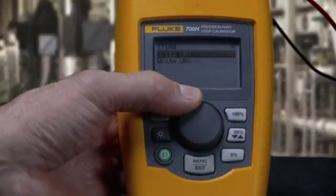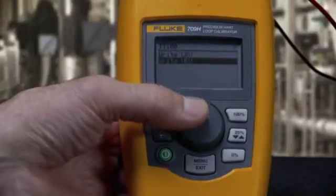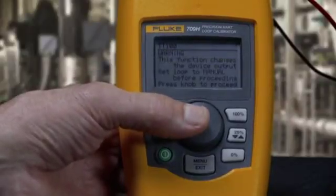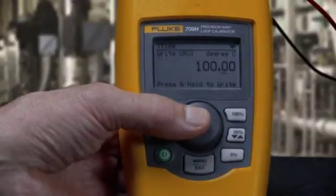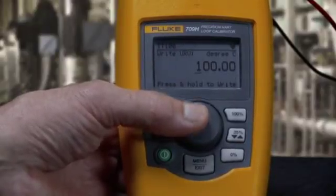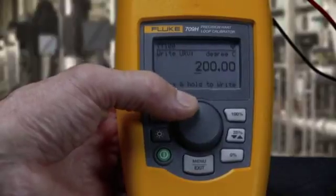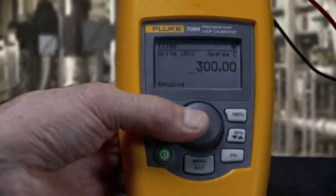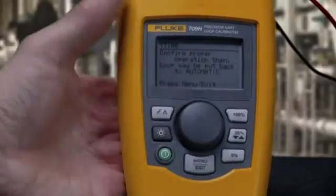The 709 has the ability to rerange a transmitter. Move the cursor to the range point you want to change, like the 100% URV point for example, and hit select. Pressing the thumb wheel changes the decade to update. Rotate the knob to the correct value to change. Press and hold the knob to write to the HART device.